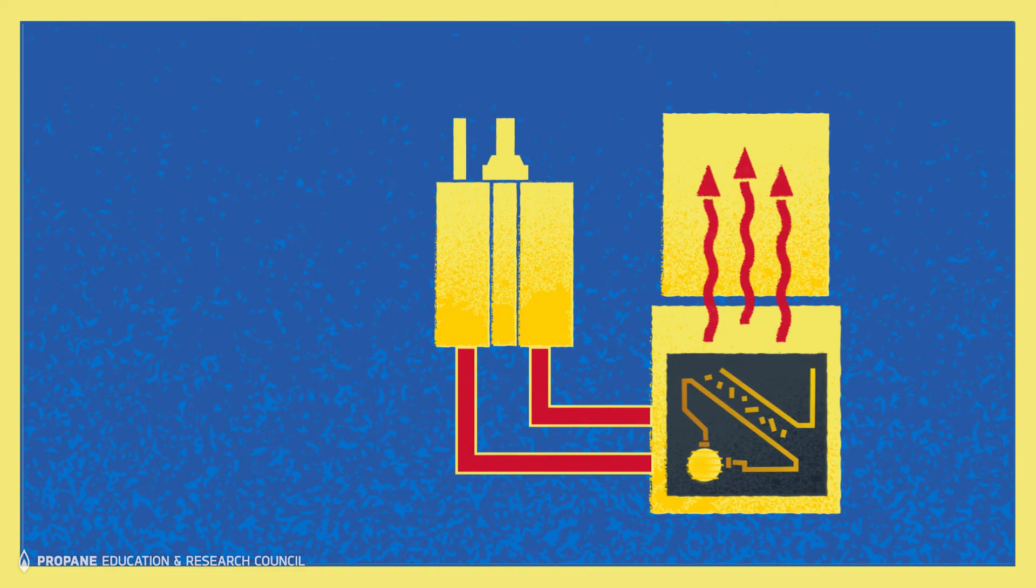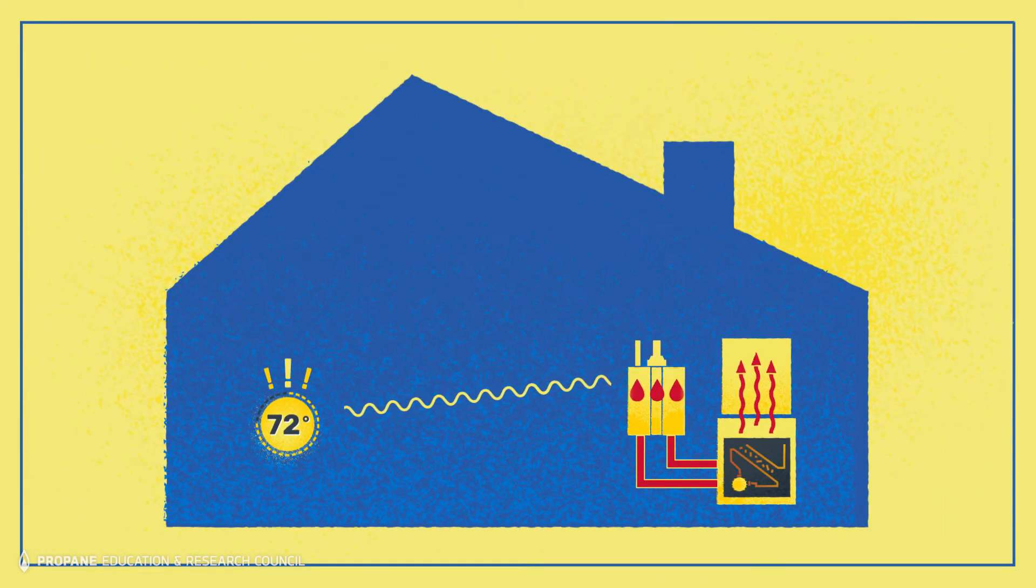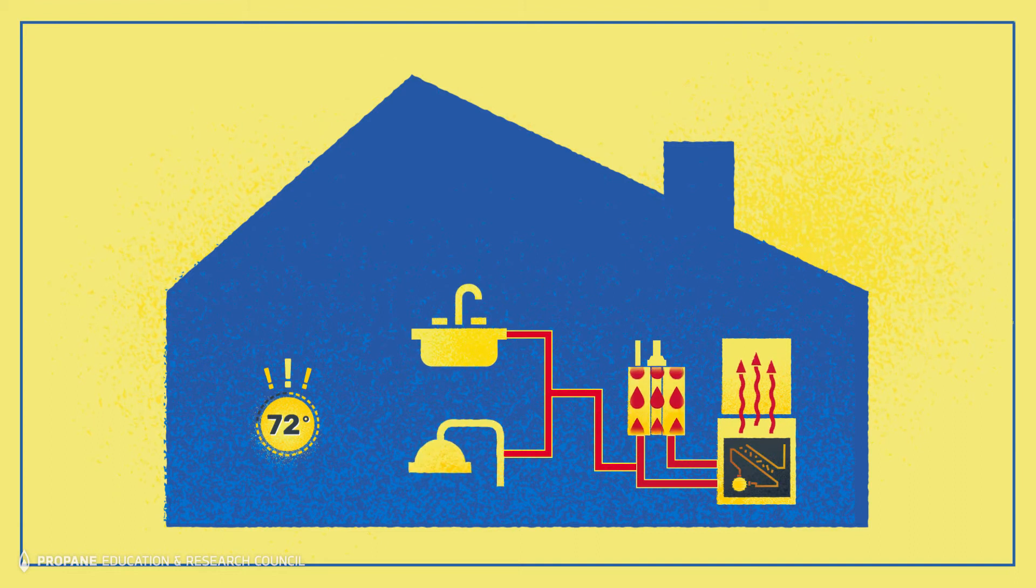Hot water passes through the hydronic heating coil in the air handler, and the air is heated as the blower moves the heated air into the structure. Water continues to circulate through the tankless water heater and the hydronic heating coil as long as there is a call for heat. A priority switch allows domestic hot water to continue to flow if there is an excess demand at the sink or the shower.